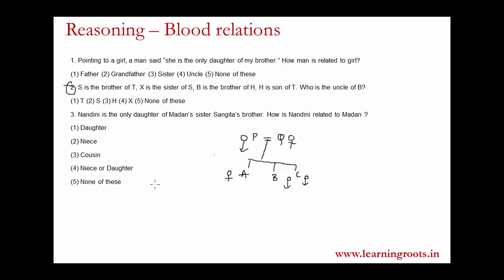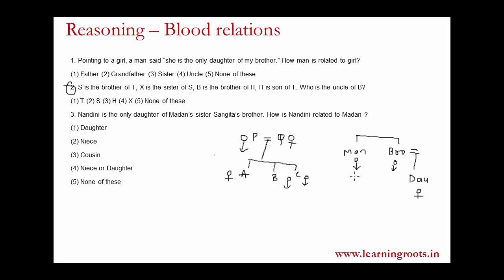You have to start with the possessive pronoun. If 'my' is present — my brother, my wife, my mother, my father — the thing which follows 'my' is your first starting point. So the man says 'my brother,' and you simply write the man here. You then write his brother — you can write BRO, represented by a male sign. The man himself is also represented by a male sign. The brother will have a daughter, represented as a female. So the man pointed at this girl and said she is the only daughter of my brother.